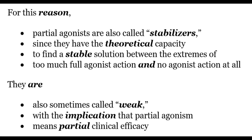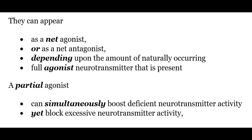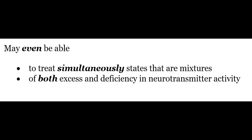For this reason, partial agonists are also called stabilizers, since they have the theoretical capacity to find a stable solution between the extremes of too much and too little neurotransmitter activity. They are also sometimes called weak, with the implication that partial agonism means partial clinical efficacy. They can appear as net agonists or net antagonists depending upon the amount of naturally occurring full agonist neurotransmitter present. A partial agonist can simultaneously boost deficient neurotransmitter activity yet block excessive neurotransmitter activity, and may even treat simultaneously states that are mixtures of both excess and deficiency of neurotransmitter activity.